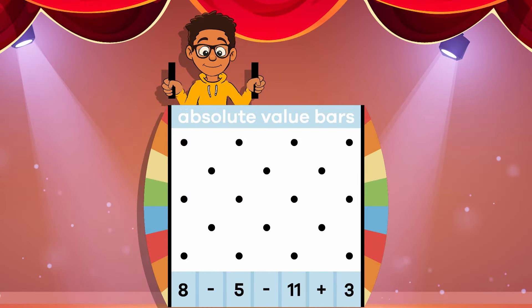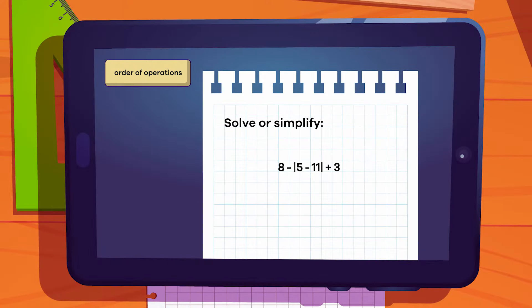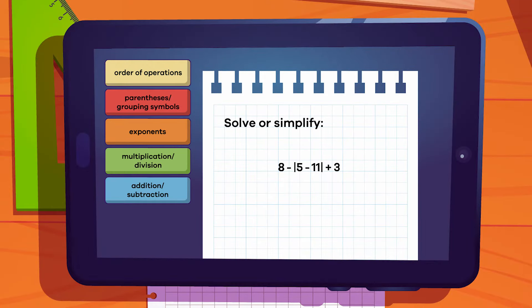Absolute value bars are a grouping symbol, just like parentheses. When using the order of operations to solve an expression or equation, absolute value is determined before any other operation. Which means you always do what is inside the bars first, before determining the answer.